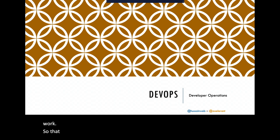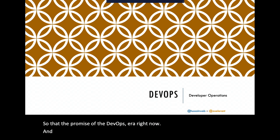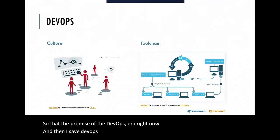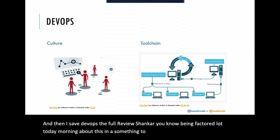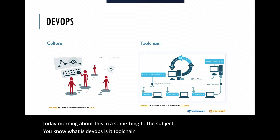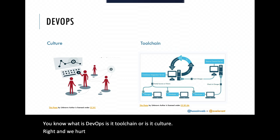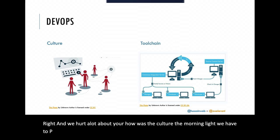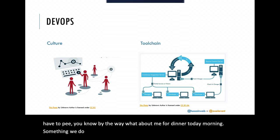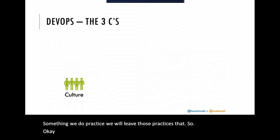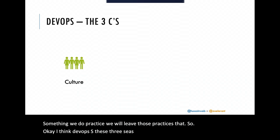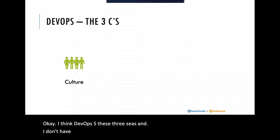That's the promise of the DevOps era. When I say DevOps revolution, we heard a lot this morning about whether DevOps is a tool chain or a culture — and I agree it's a culture. I like to think of DevOps as three C's. I'm not sure if I read this somewhere, but it's something I identify with.